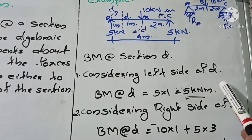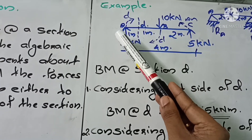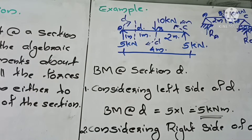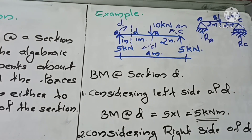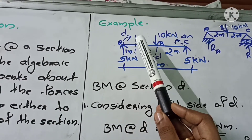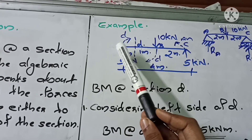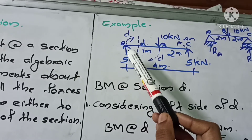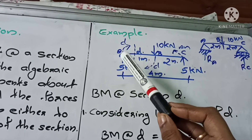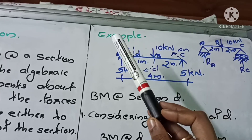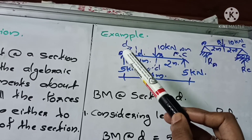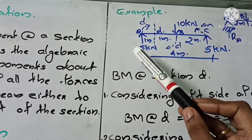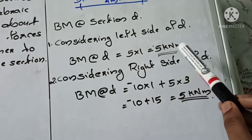Method 1: Considering the left side of D. Looking at the left side of D, there is only one force — 5 kN acting upward at A. Moment equals force into perpendicular distance between the line of action of the force and the point. The distance between A and D is 1 m, so the moment is 5 × 1. The direction is clockwise. Clockwise moments at the left side are taken as positive, so the bending moment at D is +5 × 1 = 5 kN·m.